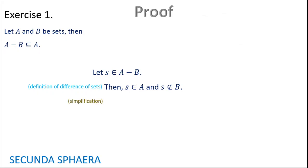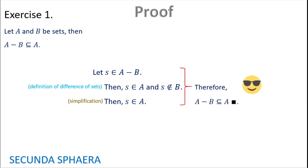So just by simplifying the conjunction that we have, then s is in A. This is an argument that starts with s in A without B and ends with s in A, which gives a containment — that containment being that A without B is contained in A.